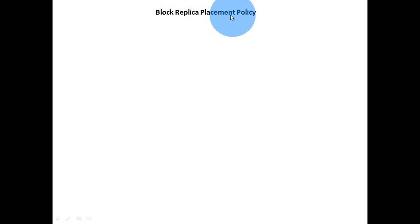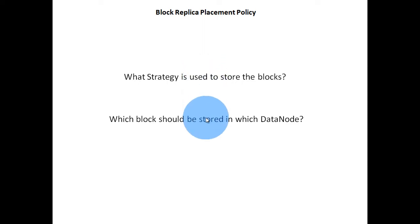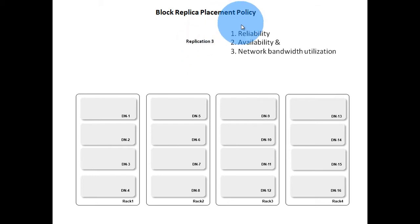Next we will learn about block replica placement policy. What strategy is used to store the blocks? Which blocks should be stored in which data node? These questions will be answered for two different scenarios. Consider a cluster with 4 racks and 16 data nodes, and a block replication factor of 3. Block replica placement policy is based on three important factors: reliability, availability, and network bandwidth utilization.